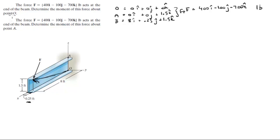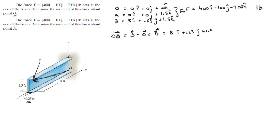For the first part, we want to find the moment about point O. To do that, you find the vector from O to where the force is applied. Vector OB equals vector B minus vector O, but since O is the origin, this equals vector B, which is 8i plus 0.25j plus 1.5k. The moment that the force creates about O is equal to the cross product of OB cross F.